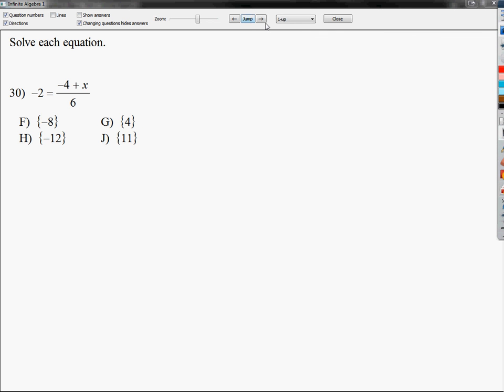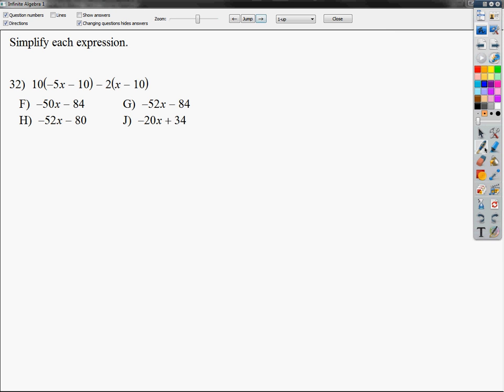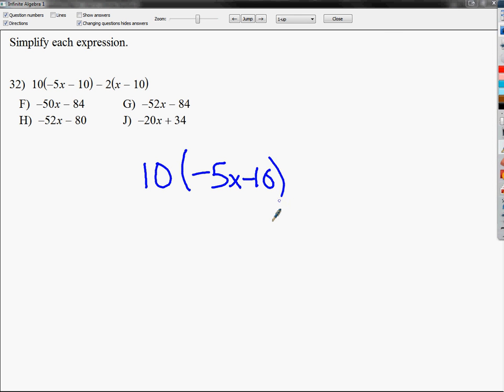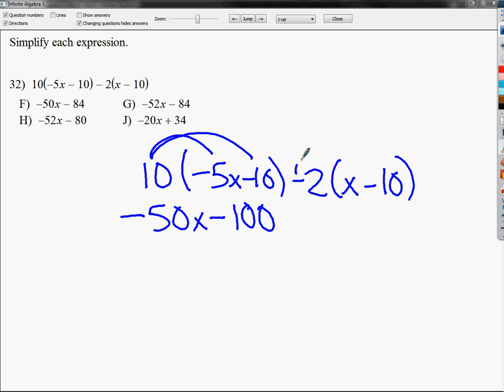I'm going to do number 32 now. This is one of those ones that looks really long. It's not difficult. It's just distributive property, and then combining like terms. Now, I have to do the distributive property parts first, so I do 10 times negative 5, which is negative 50x, and then I do 10 times negative 10, which is negative 100. The next one, I do negative 2 times 1x, so I get negative 2x, and then I do negative 2 times negative 10, which is positive 20, because a negative times a negative is a positive.